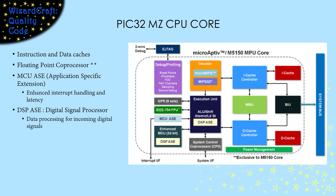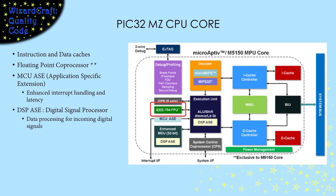The PIC32MZ series of chips uses either a microAptiv or an M5150 MPU core. These are still MIPS cores and they support everything that the MK cores supported. In addition, they have instruction and data caches between the execution unit (the ALU) and the memory management unit. In addition to CP0, this core also has a coprocessor to offload floating-point operations. There are also two application-specific extensions: the MCU ASE provides enhanced interrupt handling, and the DSP ASE is a powerful digital signal processor that optimizes processing of incoming complex signals like input from a camera. So the MZ core makes the MZ family of PICs more powerful than the MK family.